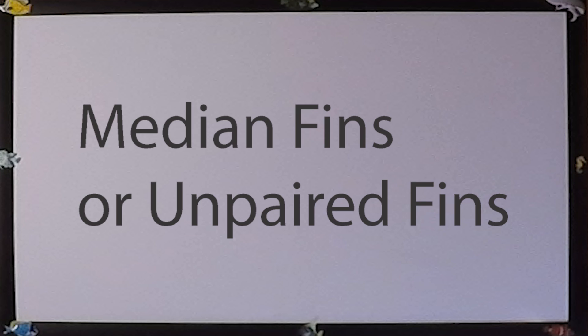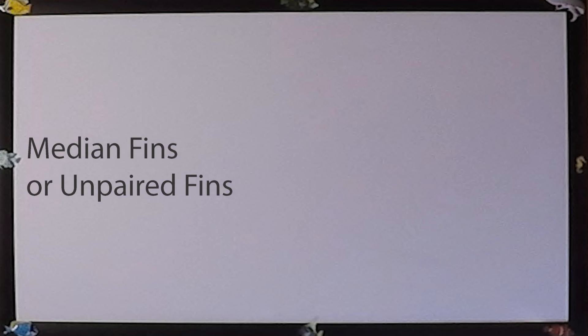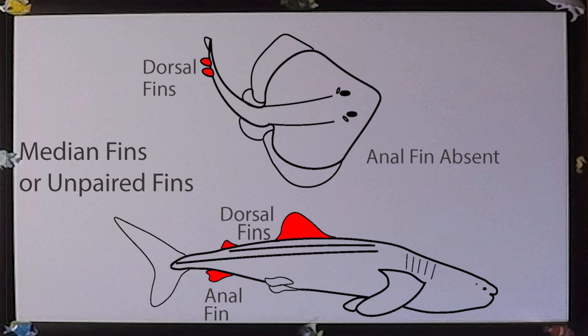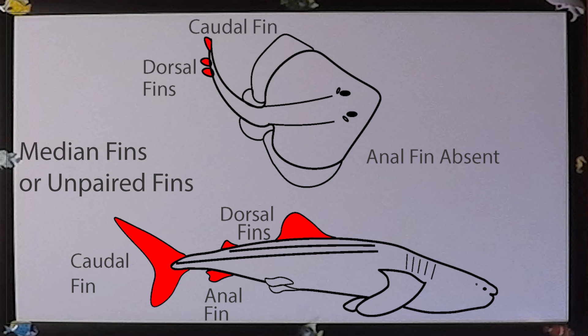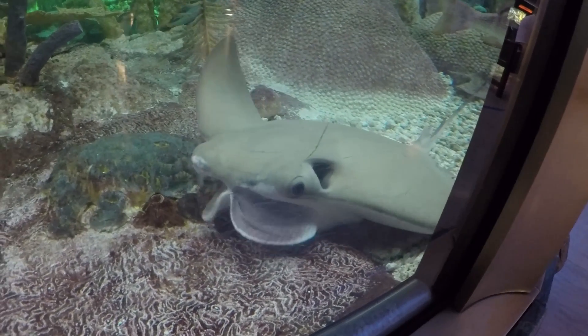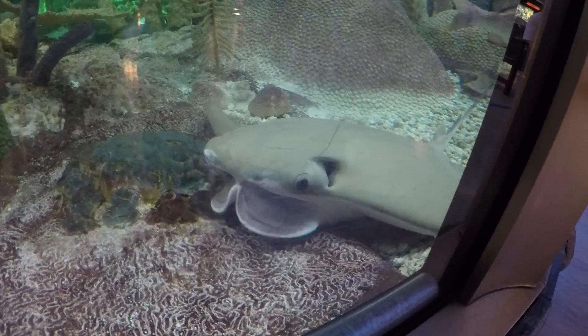The median fins, or unpaired fins, are represented by the dorsal, anal, and caudal fins. The caudal fin is absent in stingrays and reduced in bottom-dwelling rays. Most sharks have two dorsal fins and an anal fin, whereas most batoids — that is, the skates and rays — do not possess an anal fin.